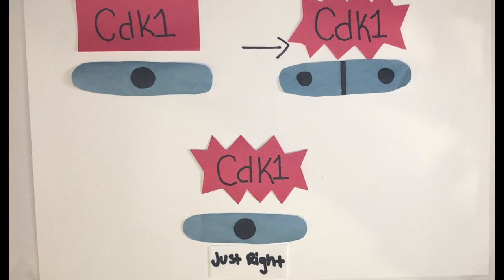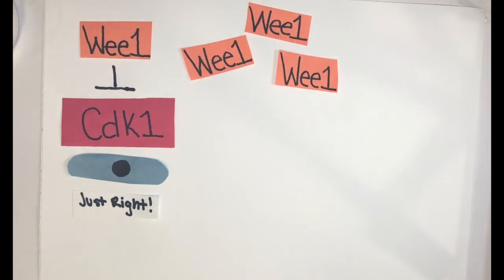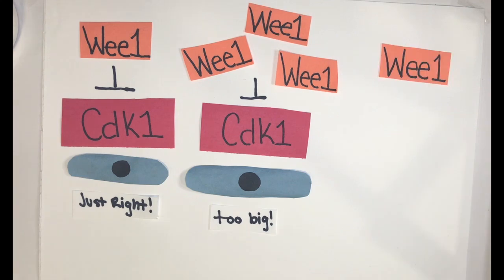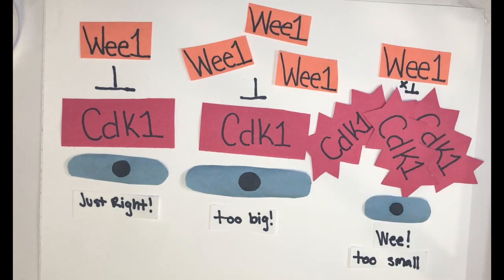Altering the balance of Wee1 and CDK1 activity causes cells to divide at the incorrect size. Too much Wee1 delays CDK1 activation, causing cells to become too big. Too little Wee1 causes overactive CDK1, resulting in Wee cells.